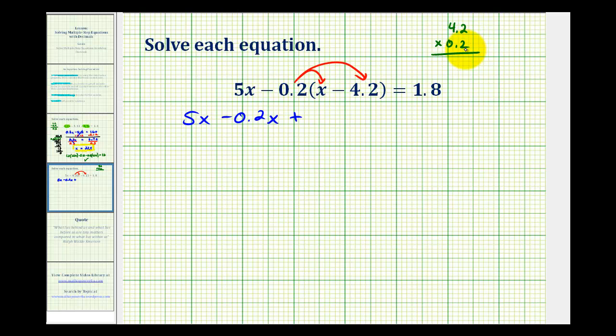Well, 42 times 2 would be 84. But we have to have two decimal places. So this is going to be 0.84. So we'll have plus 0.84 equals 1.8. Notice we do have two like terms here. So 5x minus 0.2x. That would be 4.8x.